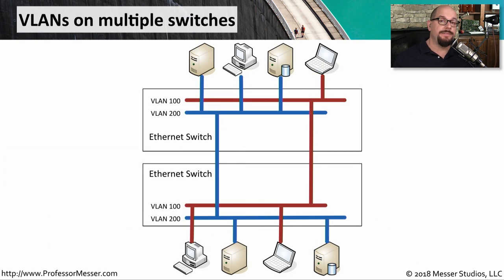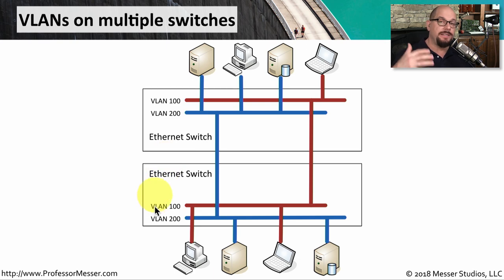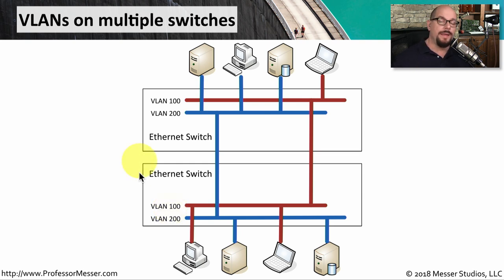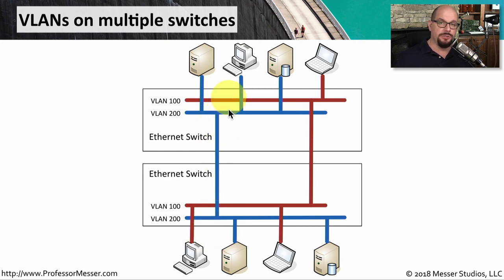What if you were spreading these VLANs across multiple switches? You might have an ethernet switch with VLAN 100 and VLAN 200, and then a different physical switch which also has the same VLAN 100 and VLAN 200. One way to connect these VLANs would be to run one cable for VLAN 100 between the two switches and another cable for VLAN 200. This obviously would not scale well once you have a larger number of VLANs — what if there are 10, 100, or 1,000 VLANs shared between these switches?